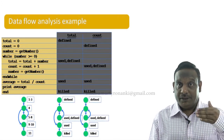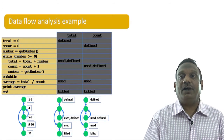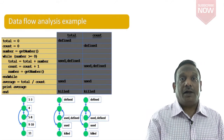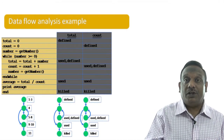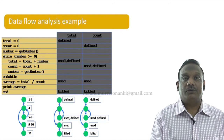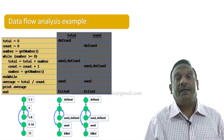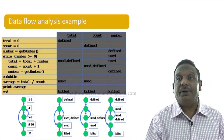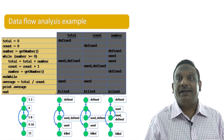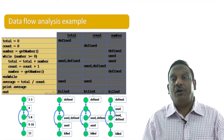For the variable 'count': at line 2 it is defined. Inside the while loop, count is incremented — so it is used and redefined. Outside the loop in the average calculation, count is used again, and ultimately killed. For 'number': at line 3 it is defined. Inside the while loop it is used, then redefined within the loop, and at the end of the program it is killed.